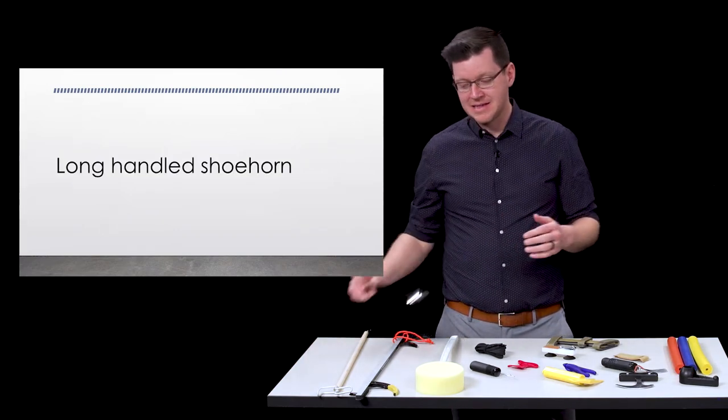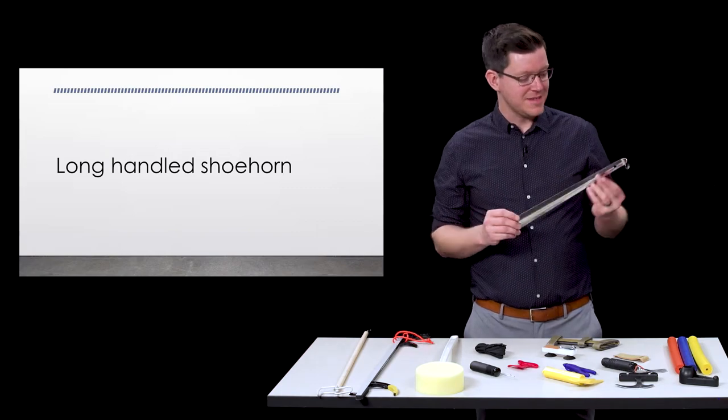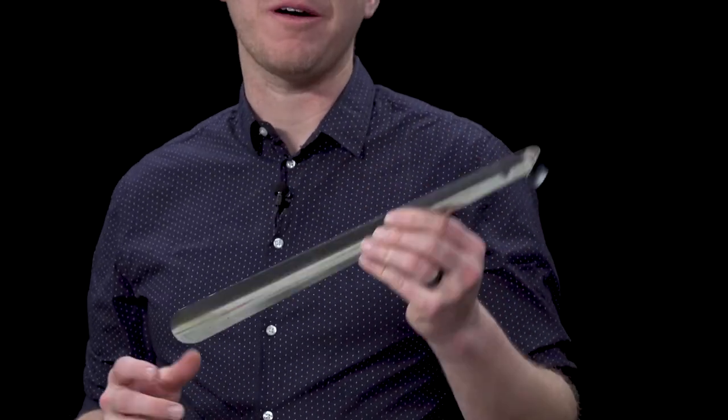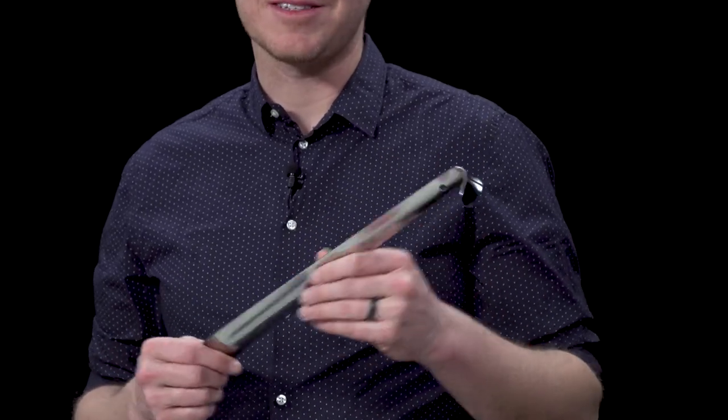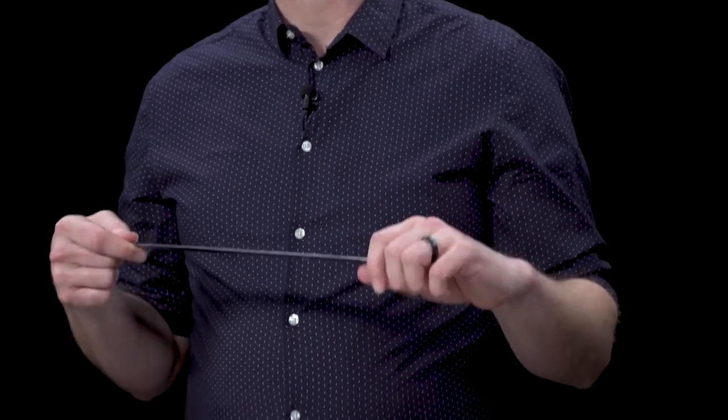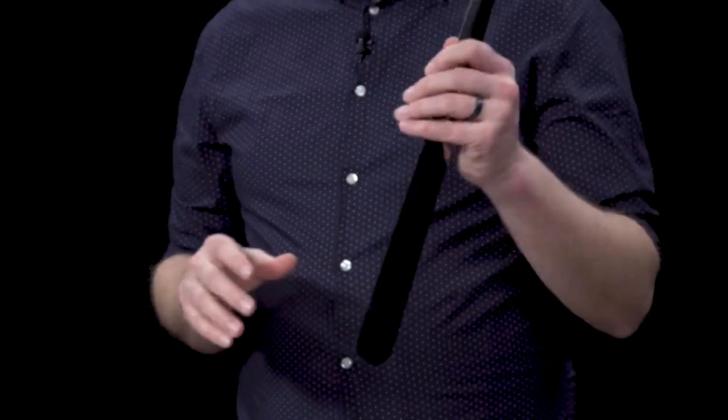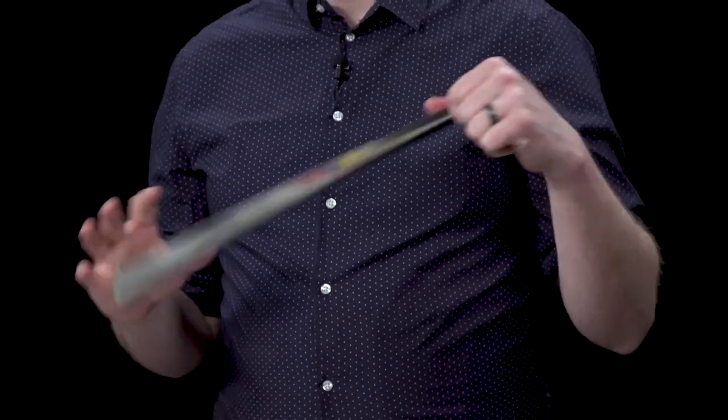This is a long-handled shoehorn. You're probably familiar with maybe what a shoehorn does and what it is. But what this does is allow you to be able to take your shoes off easier without having to bend too far down and also has a little easy to hold grip.